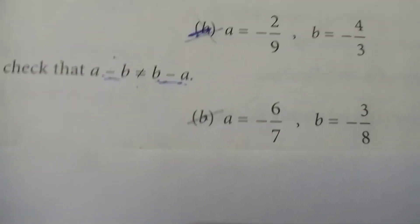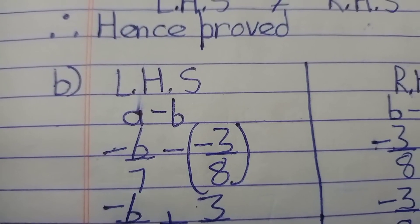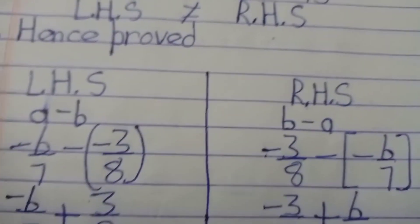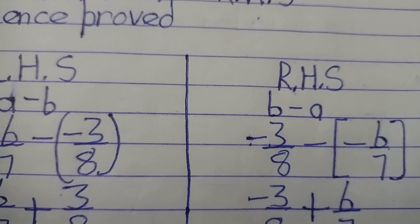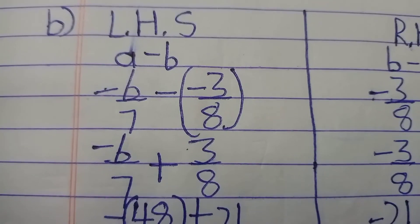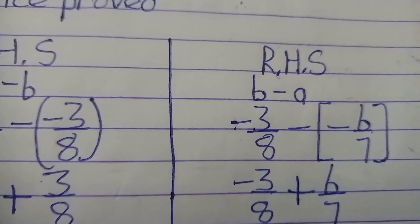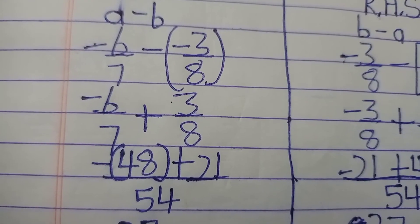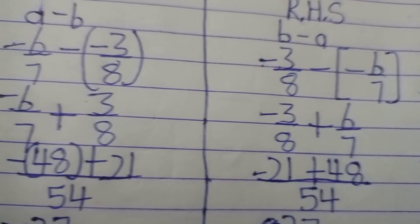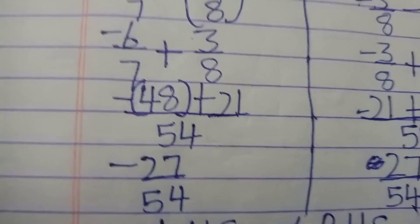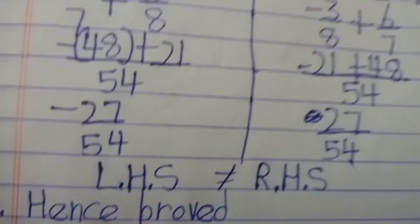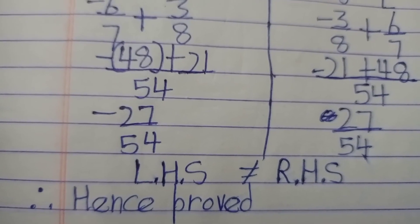Part (b): a = -6/7, b = -3/8. LHS = -6/7 - (-3/8) = -6/7 + 3/8 = (-48 + 21)/56 = -27/56. RHS = -3/8 - (-6/7) = -3/8 + 6/7 = (-21 + 48)/56 = 27/56. LHS ≠ RHS. Hence proved. That's all for today; I'll see you in the next video.